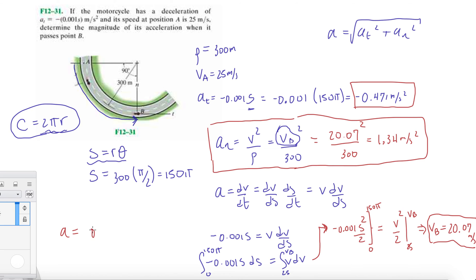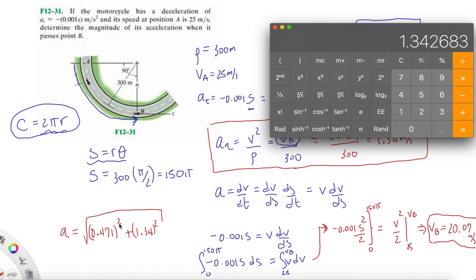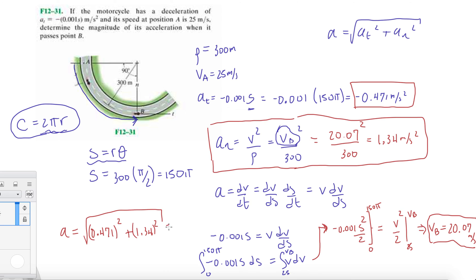It'll be 0.471 squared plus 1.34 squared. Remember, I usually don't put the negative in there just because it's going to get cancelled out when you square it. Let's take the square root of all this and we get 1.42 meters per second.